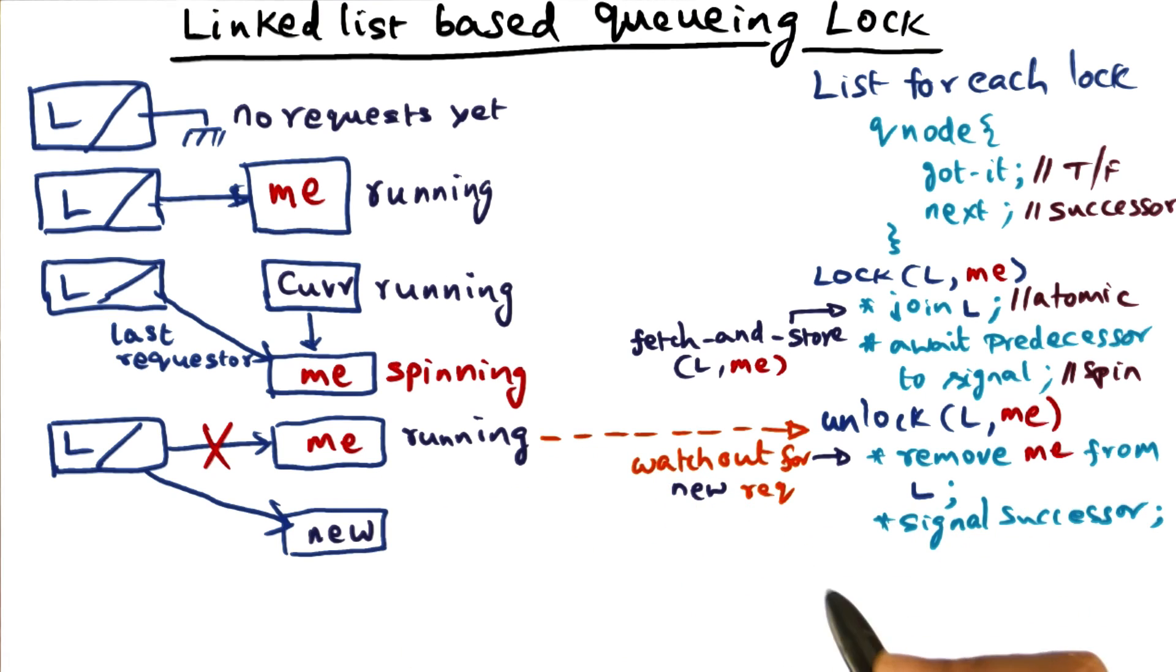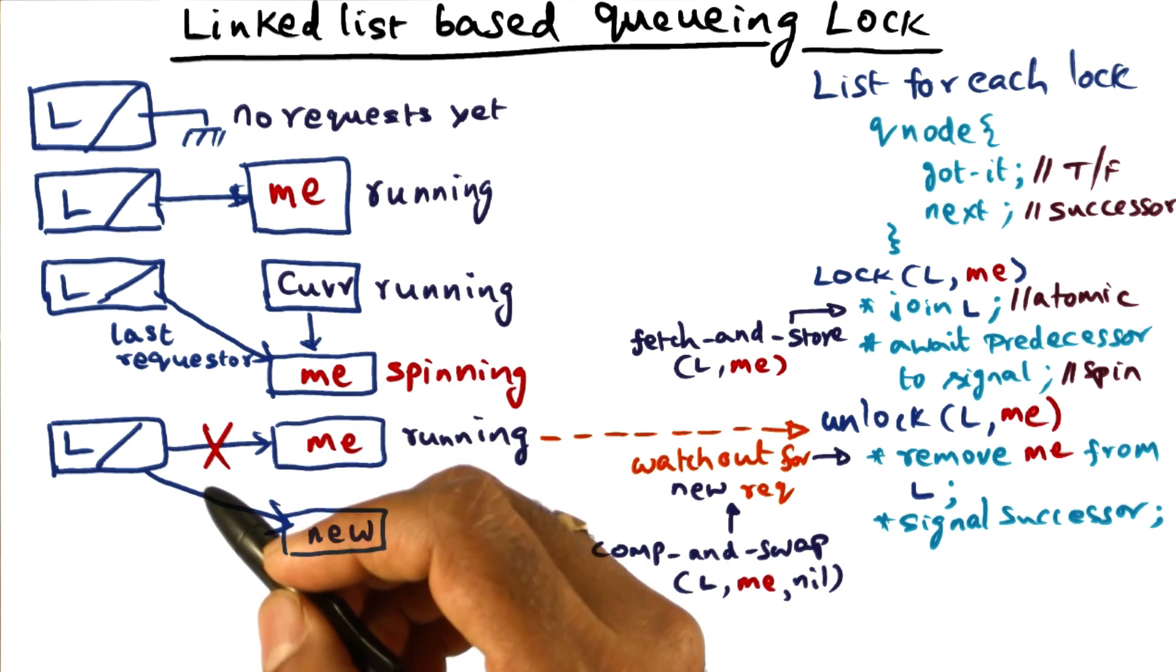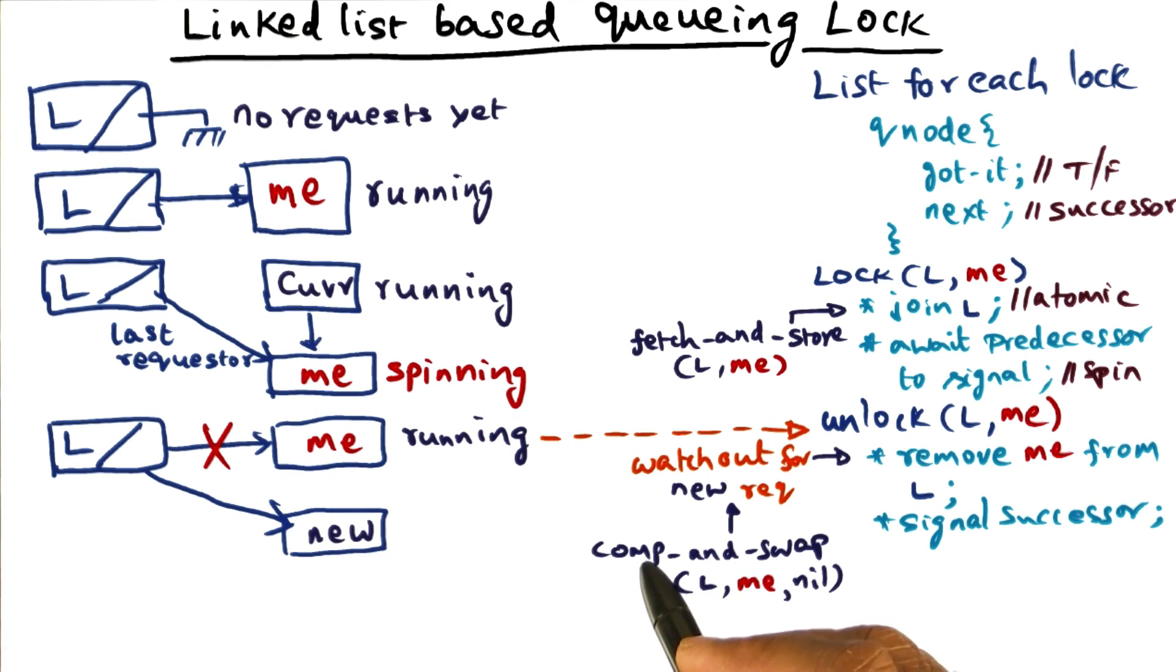And that invariant is in the form of a conditional store operation. The conditional store being, do the store only if some condition is satisfied. Now in this particular case, I'm going to tell you a primitive that would be useful for this purpose. And that primitive is what is called compare and swap.